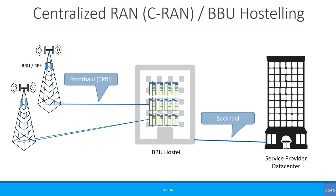The issue with centralized RAN is that you need to run dark fiber from remote tower sites to the BBU hotel, which may be in a centralized location. The maximum distance for these fibers is around 12 to 14 kilometers due to latency limitations. That's how the centralized RAN, or C-RAN, architecture works.